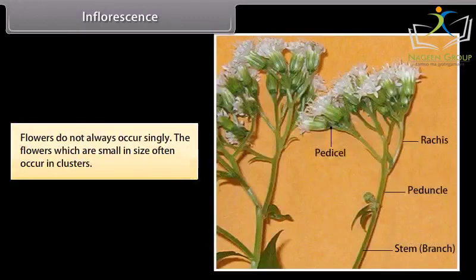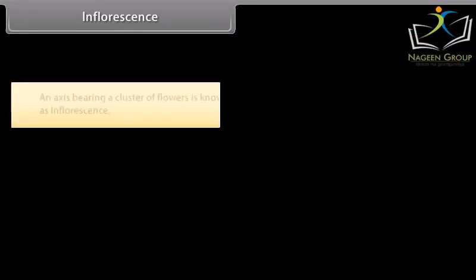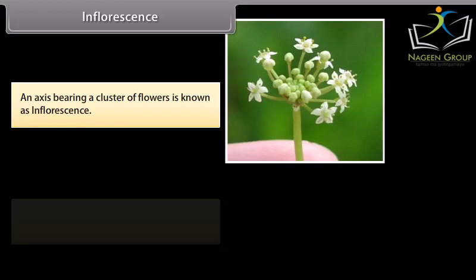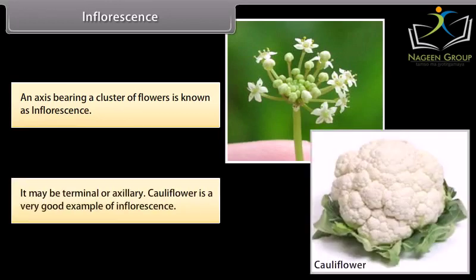Inflorescence. Flowers do not always occur singly. The flowers which are small in size often occur in clusters. An axis bearing a cluster of flowers is known as inflorescence. It may be terminal or axillary. Cauliflower is a very good example of inflorescence.